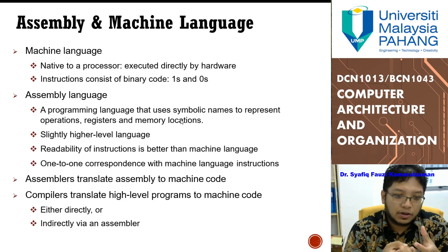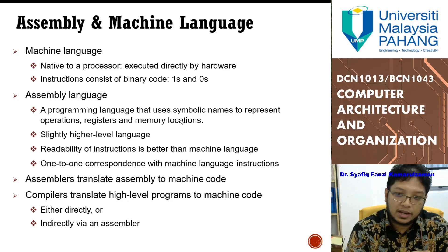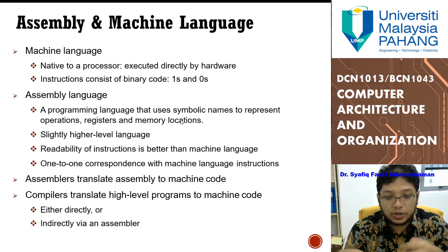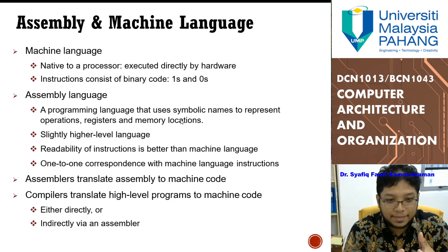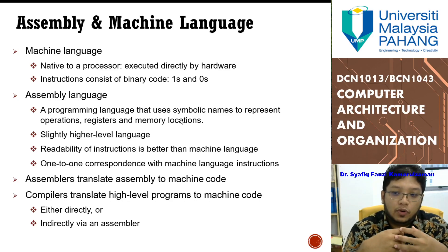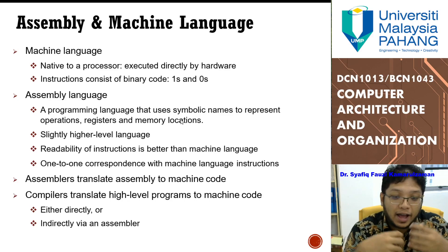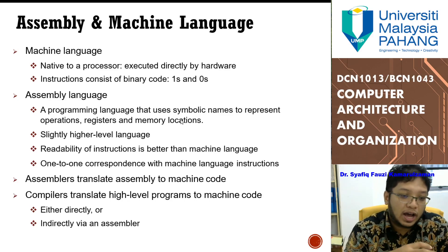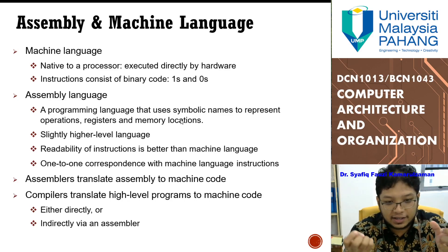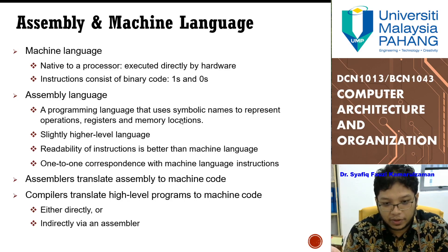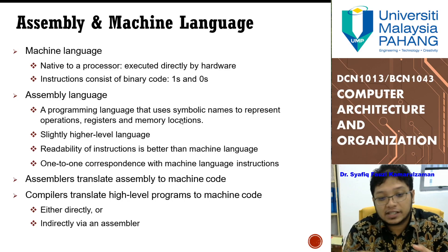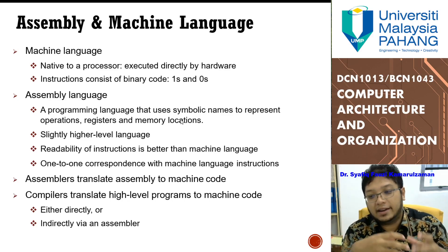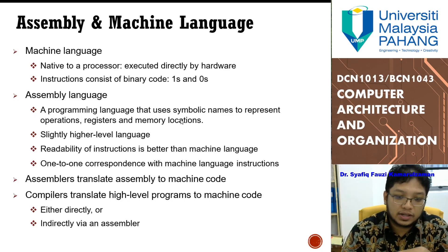To convert assembly language to machine code, you need what we call an assembler. An assembler works like a compiler for high-level language. High-level languages translate high-level programs to machine code — either directly to machine code, or sometimes they translate it first into assembly language through an assembler, and later on into machine code.